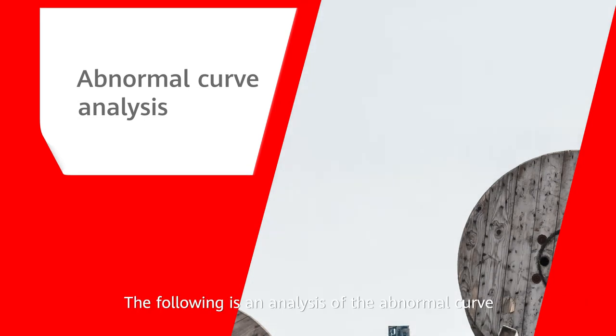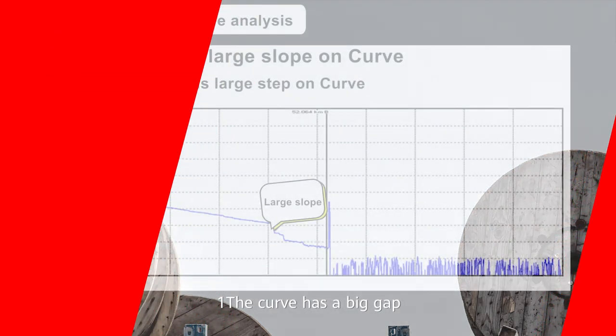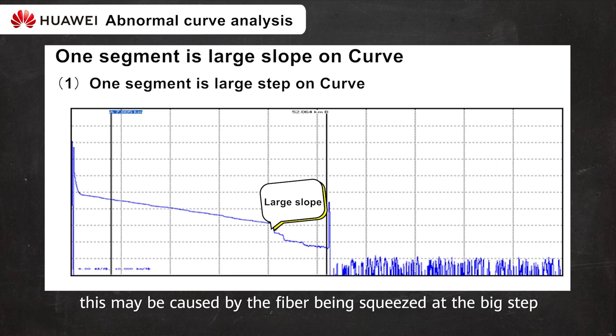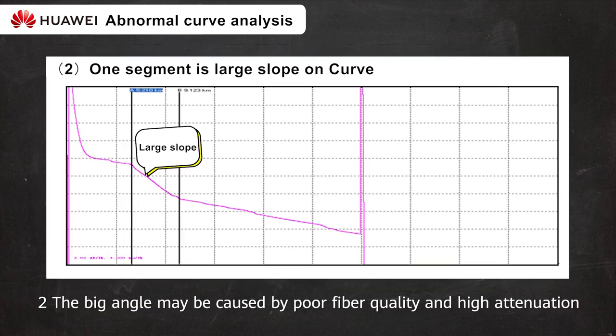The following is an analysis of the abnormal curve. 1. The curve has a big gap. This may be caused by the fiber being squeezed at the big step, the optical fiber coil being too small, or the fusion splicing quality being poor.